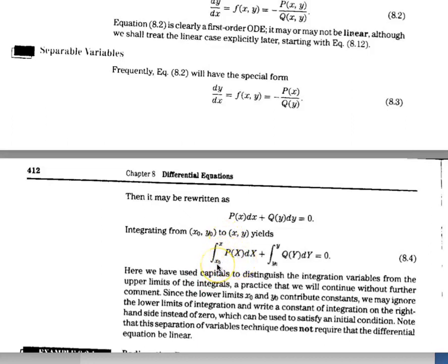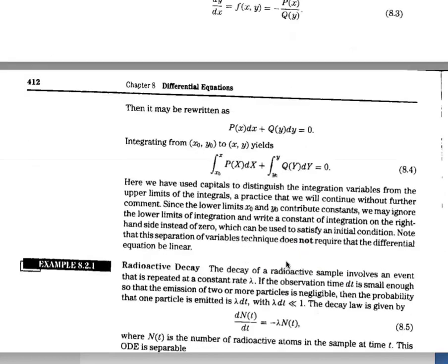When variables are separated you can directly integrate both sides: integrate the x part with respect to x and the y part with respect to y. This is what you always look for first with first order differential equations — you endeavor to see if the variables can be separated. When they are separable, you integrate each side and move on toward getting the solution.